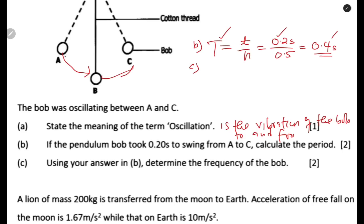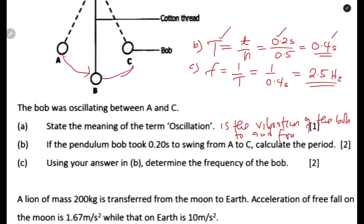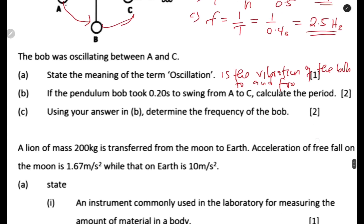For part (c), using your answer from part (b), determine the frequency of the bob. Frequency = 1 / period = 1 / 0.4 seconds = 2.5 hertz. Frequency is measured in hertz. That is how we answer this question.